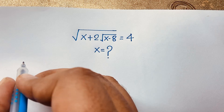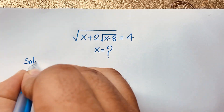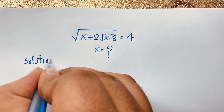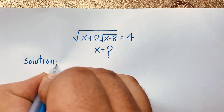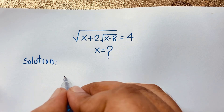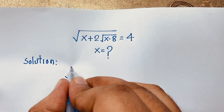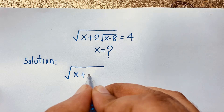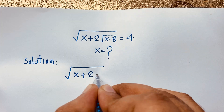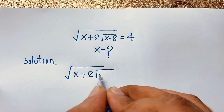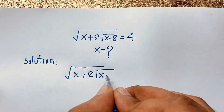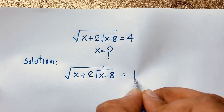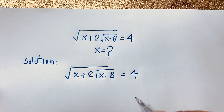So our math solution. Our question is: square root of (x plus 2 square root of (x minus 8)) is equal to 4. This is our math problem.